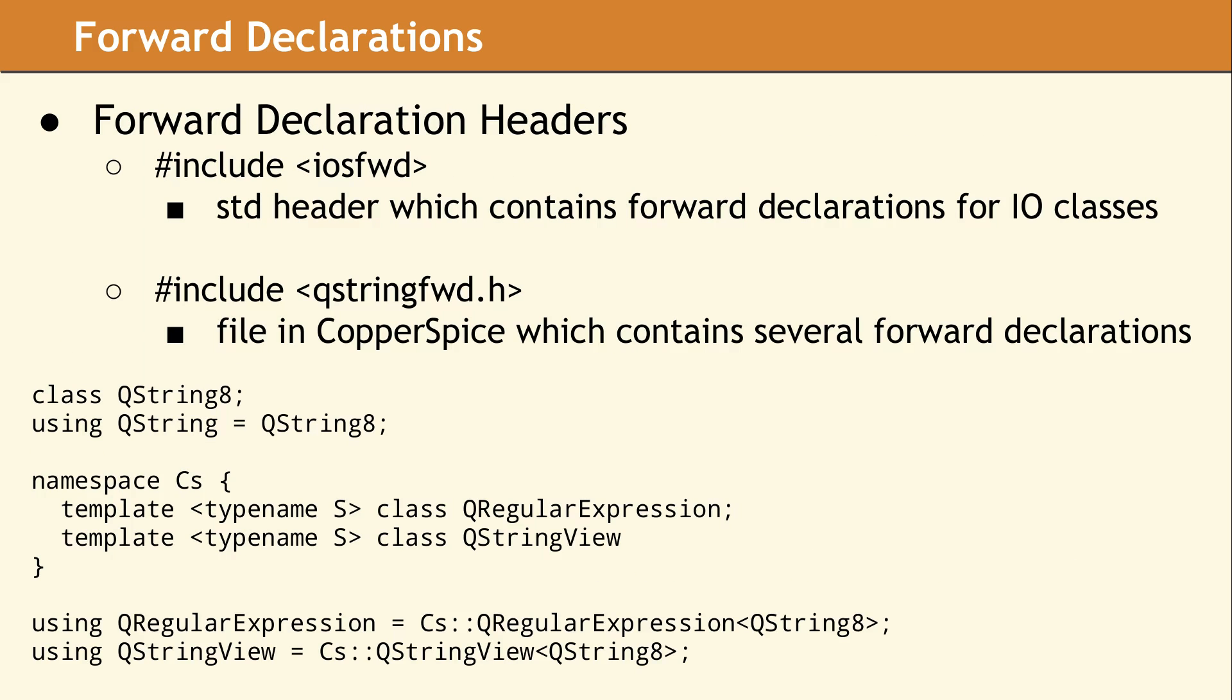Since you cannot forward declare any class in the std namespace, the C++ standard provides a few header files which contain commonly required forward declarations. The header file, IOS FWD is provided by the standard and forward declares classes like IStream and OStream.